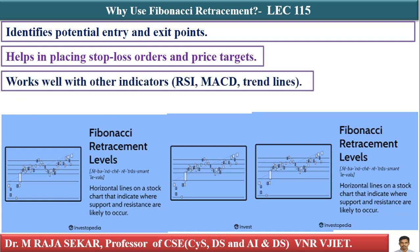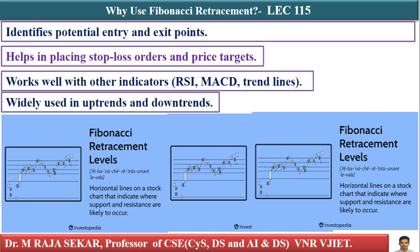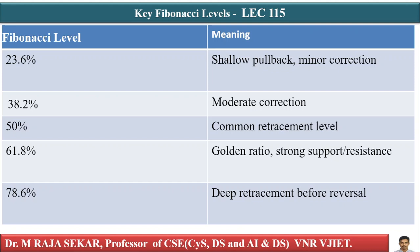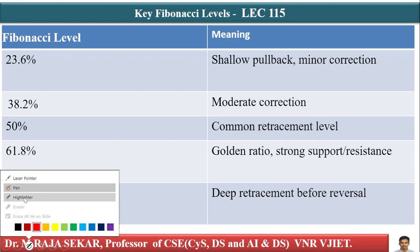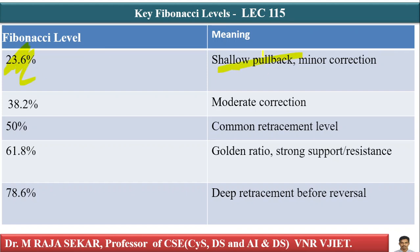It works well with other indicators like RSI, MACD, and trend lines. It is widely used in uptrends and downtrends. As for the levels: 23.6 means a minor correction or shallow pullback; 38.2 means a moderate correction; 50% is a common retracement level; 61.8 is the golden ratio — strong support and resistance; and 78.6 means a deep retracement before reversal.